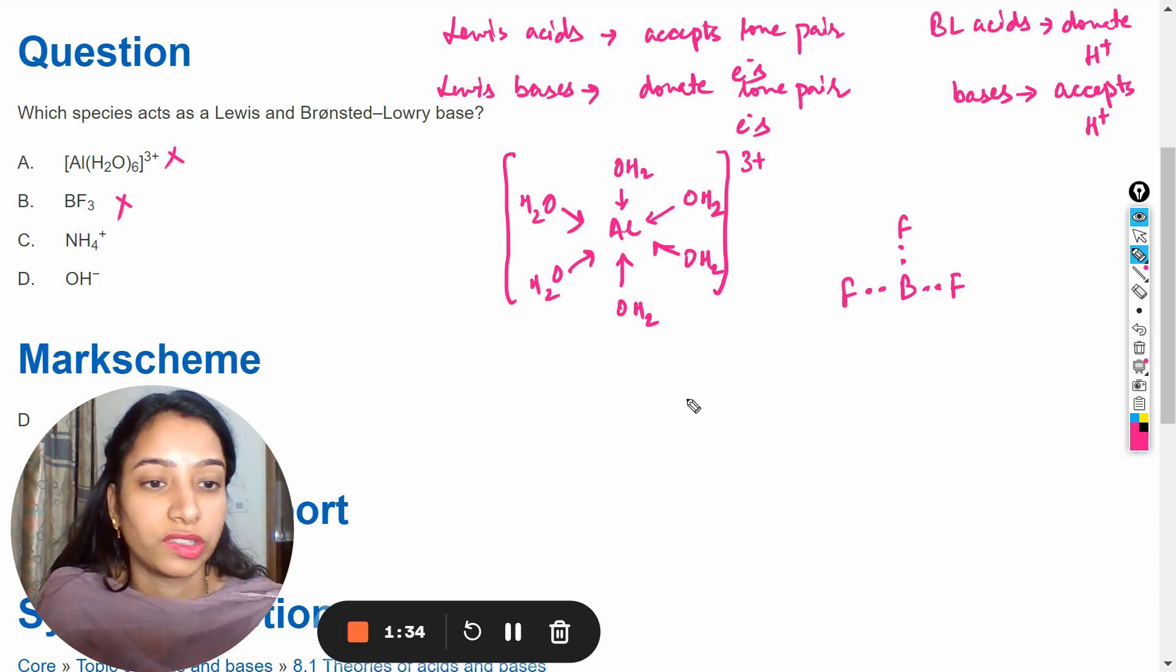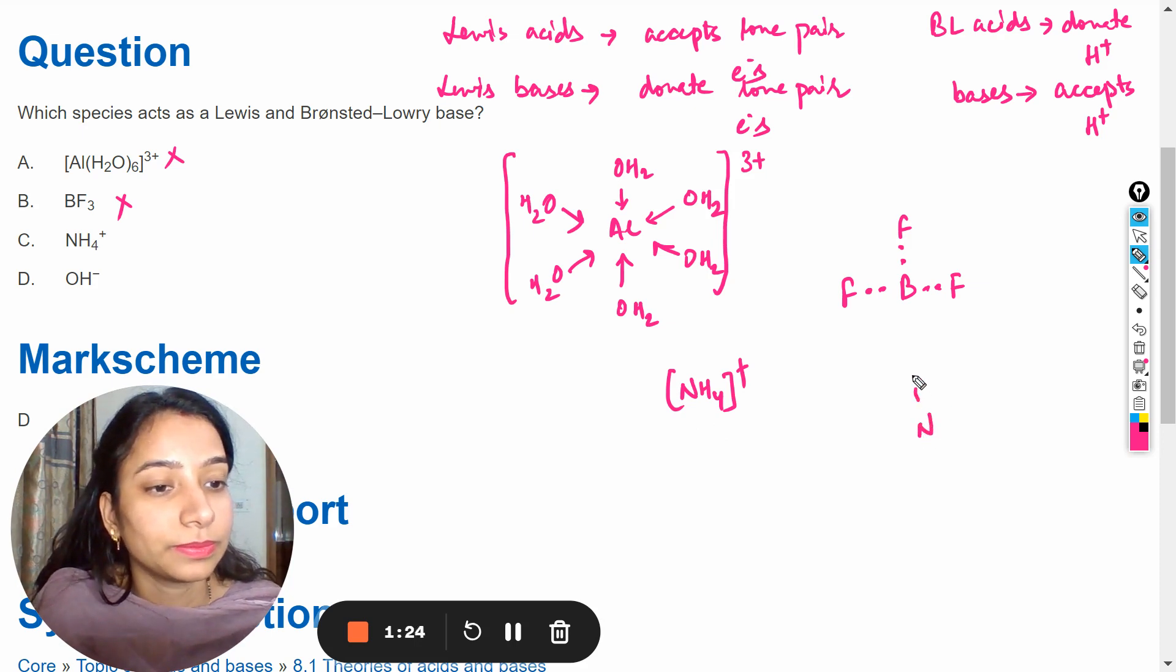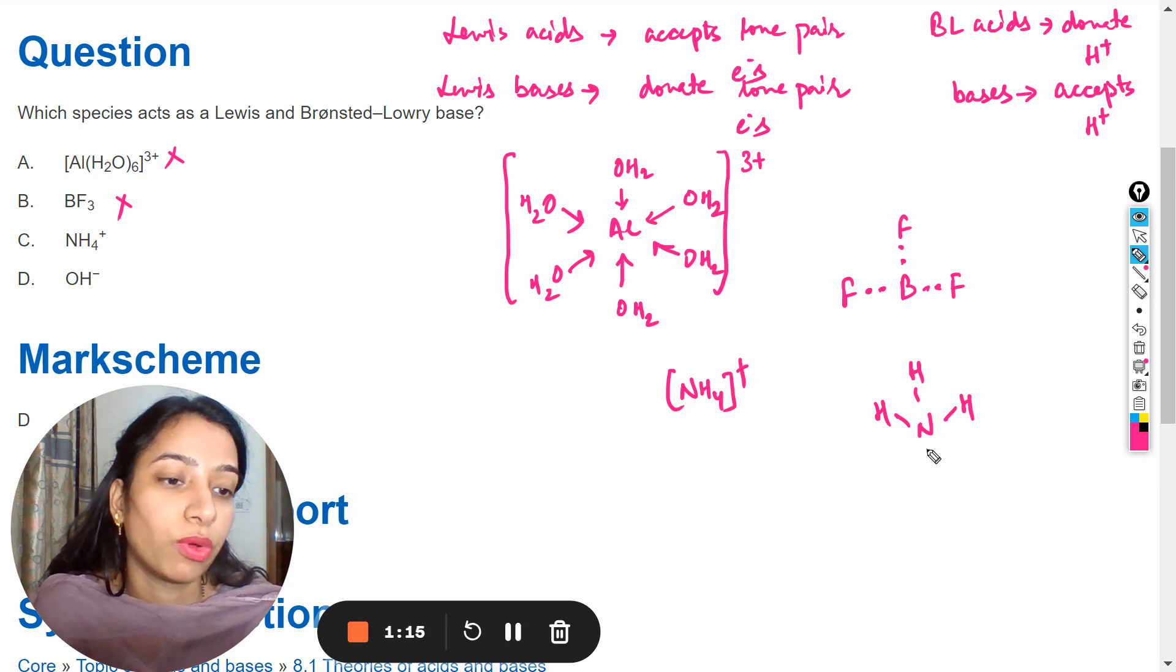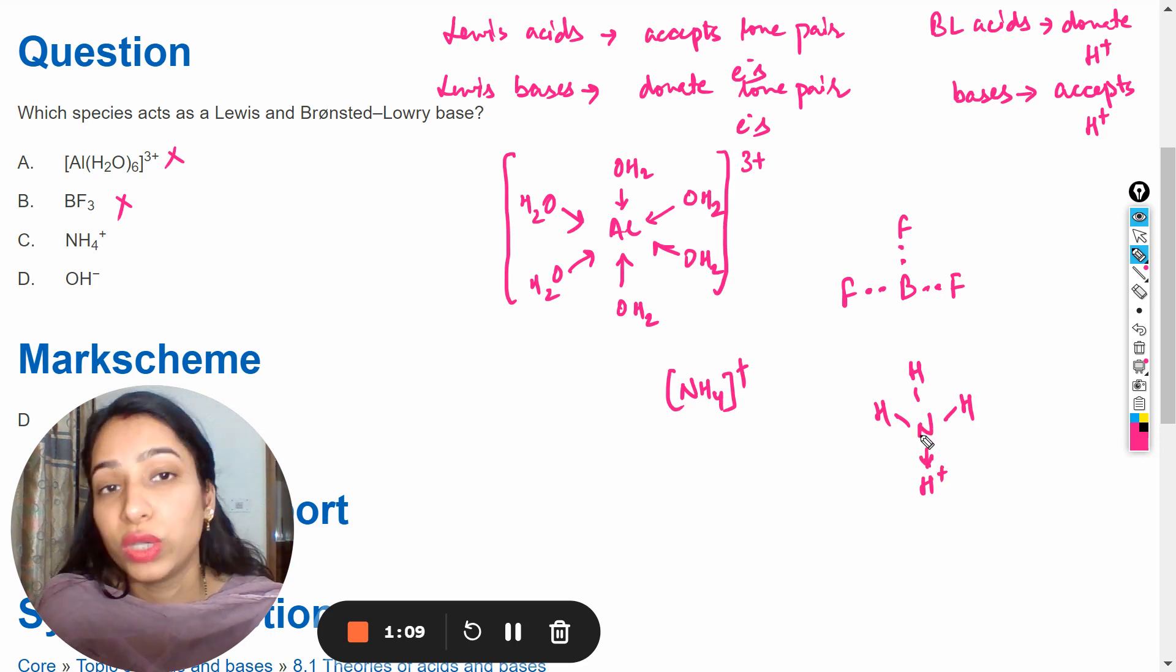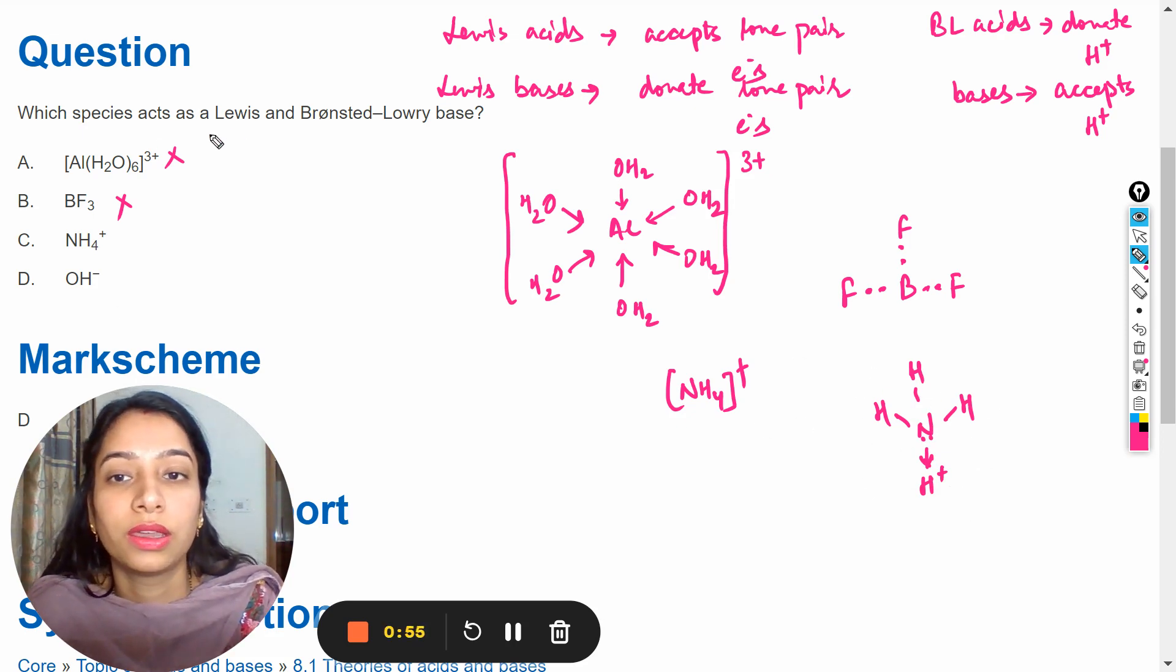Next is NH4 positive. This NH4 positive again it has no lone pair because it makes the coordinate bond with this H positive by donating its lone pair to the H positive. So this is the structure of NH4 positive, again this can't act as Lewis base.